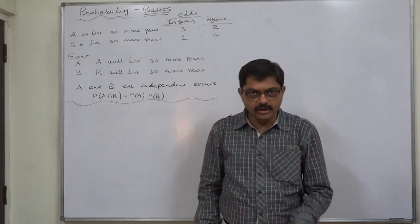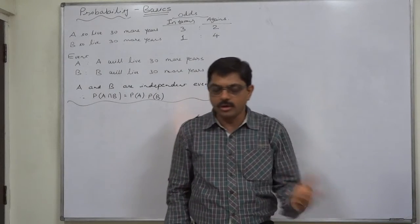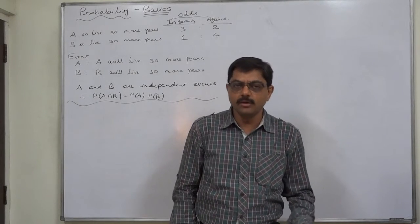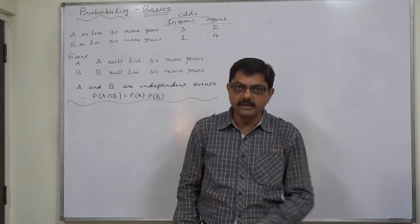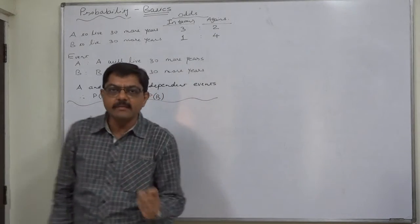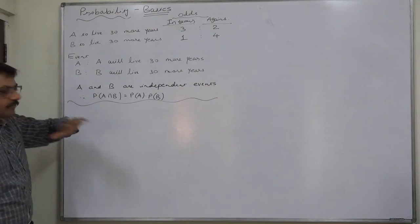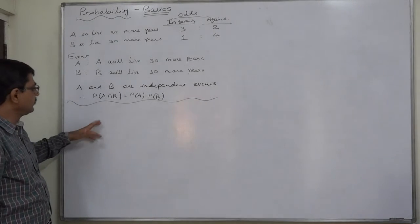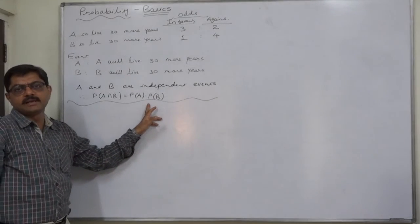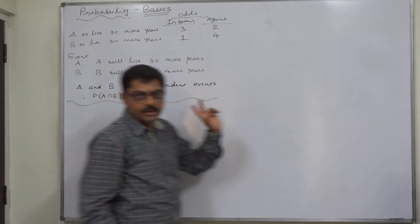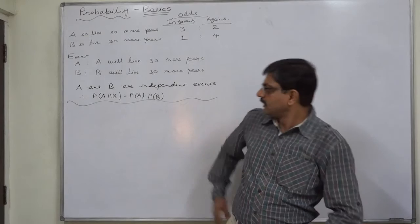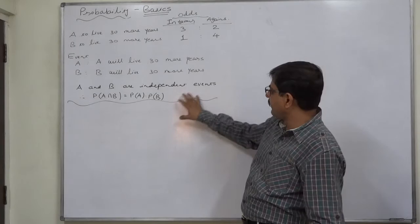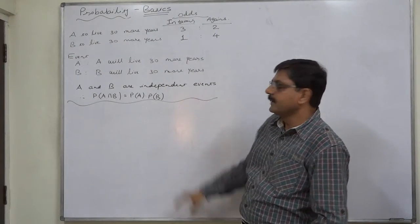A living 30 more years is not dependent on B's living or not living. Similarly, B living 30 more years is not dependent on A's living or not living. That means A and B are two independent events. The result of being independent is that P(A ∩ B) equals P(A) × P(B).